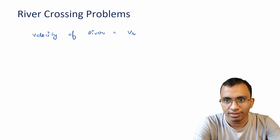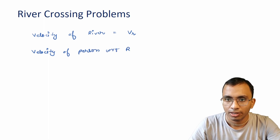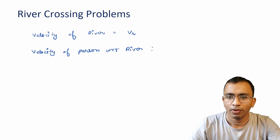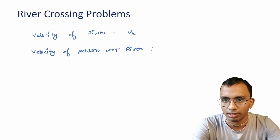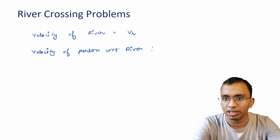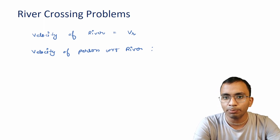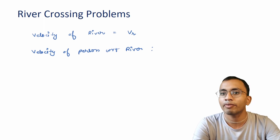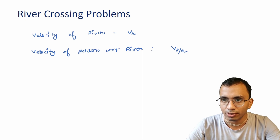The second is the velocity of person with respect to river — meaning the velocity with which the person swims relative to the river. This is also called the velocity of swimming in stationary water. If it's a boat instead of a swimmer, we call it the velocity of boat with respect to river.